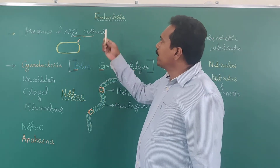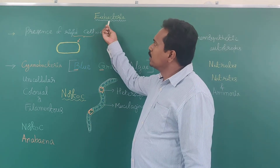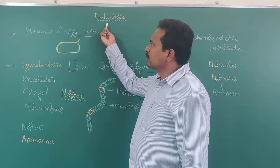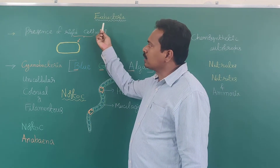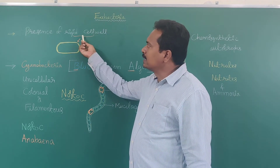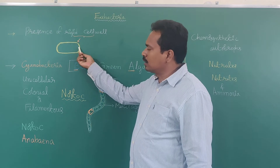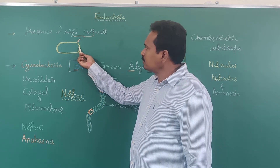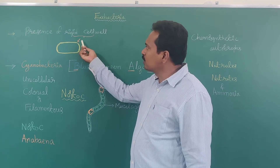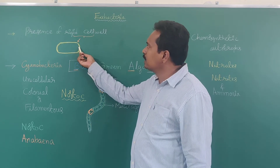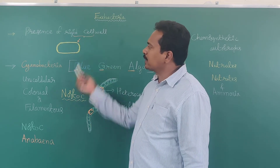What about Eubacteria? Eubacteria consist of a rigid cell wall. So a rigid cell wall is present in Eubacteria.